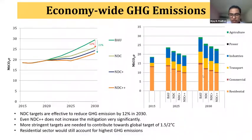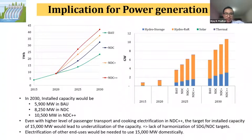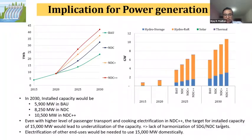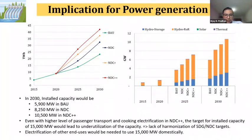The residential sector would still emit the highest. The graph here shows energy generation in terms of energy as well as installed capacity. In 2030, the installed capacity in BAU would be 5,900 megawatt, and in NDC plus-plus it would be around 10,500 megawatt. Even with higher levels of passenger transport and cooking electrification in NDC plus-plus, the target for installed capacity of 15,000 megawatt from both SDG and NDC would not be utilized. We see there is a lack of harmonization of SDG and NDC targets, so we need electrification of other end-users to use 15,000 megawatt domestically, or we have to look for export options.